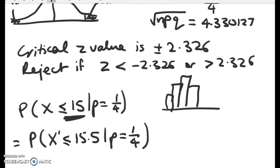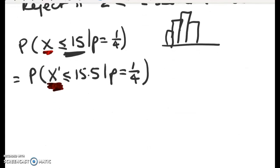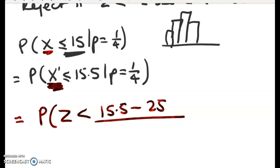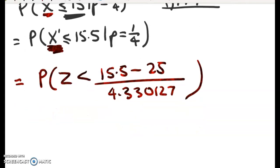So the notation I'm using here, you don't need to use this, but this is saying that X bar is my normal approximation, whereas X is my exact binomial thing. So working this out now, we get probability that Z is less than 15.5 minus 25 divided by the standard deviation, which is 4.330127. So this gives me the probability that Z is less than all of that.